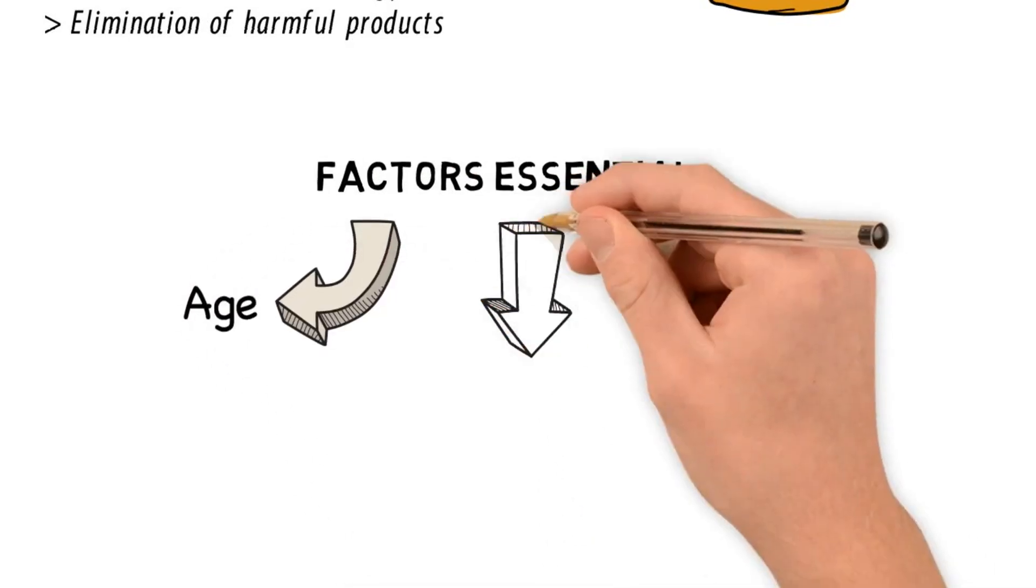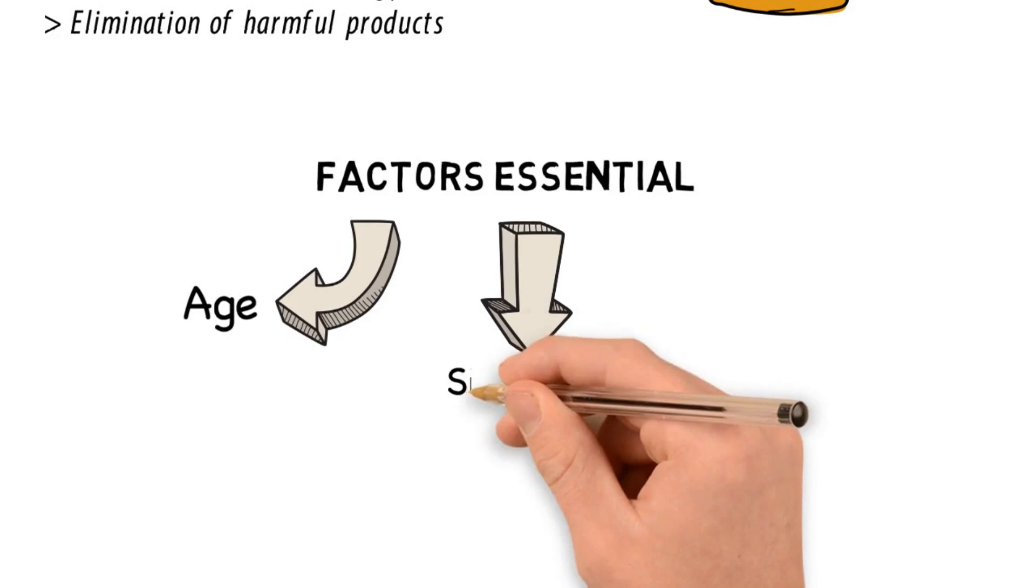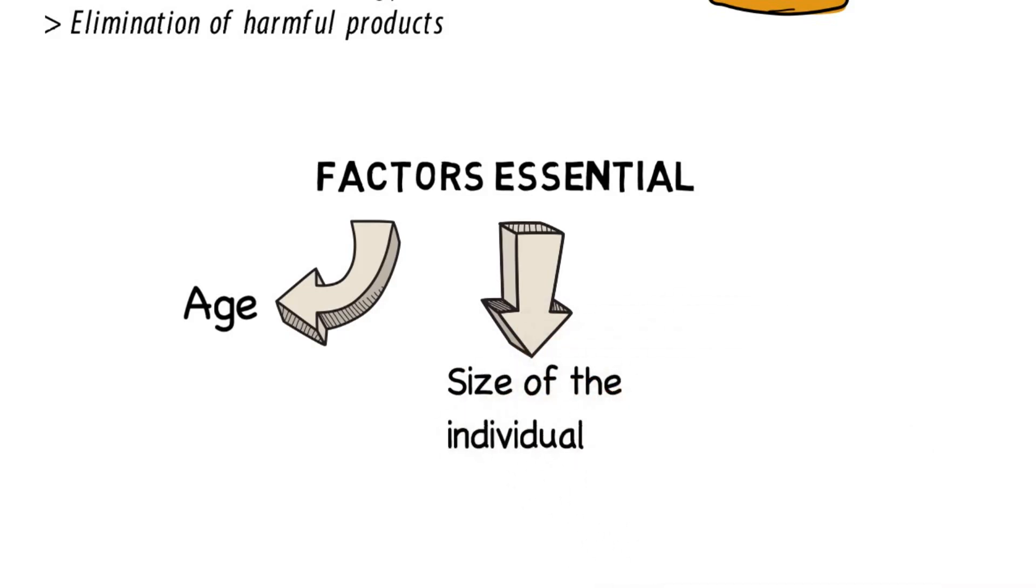Now, let us see what factors influence metabolism. Factor number one, age. Number two is size of the individual. And number three is physical exercise.